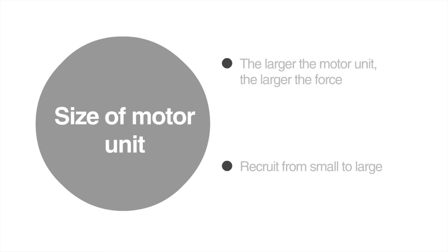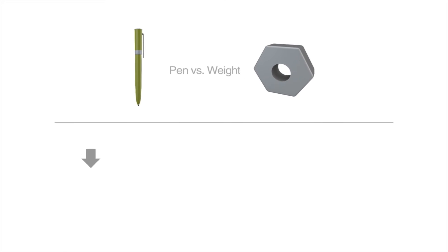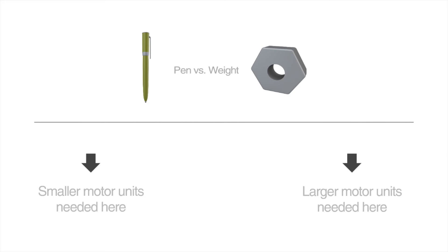What's more, motor units are often recruited from smallest to largest. In other words, whenever we're doing some type of activity, we'll recruit our smaller motor units before the larger ones. Let's go back to the pen and five pound weight example. When you lift the pen, you're recruiting motor units that are smaller than the ones you would need to recruit when you lift that weight. Again, larger motor units produce a larger force. Similarly, when you curl that five pound weight, you recruit the smaller motor units in your bicep before you recruit the larger ones.